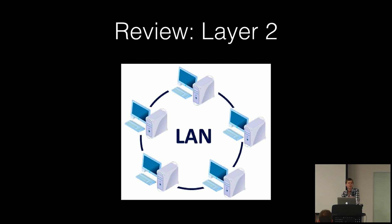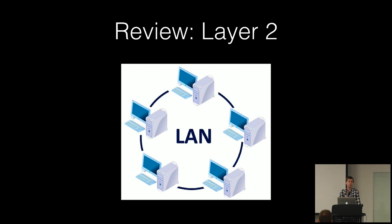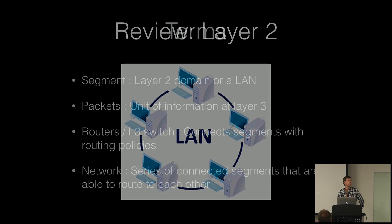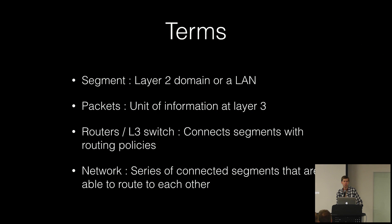Layer two covered media access control, local communications, and how it handles potential problems of a shared medium. The hardware at that level included hubs and bridges, which we later learned to call switches. But here at layer three we have a few other terms to know about.